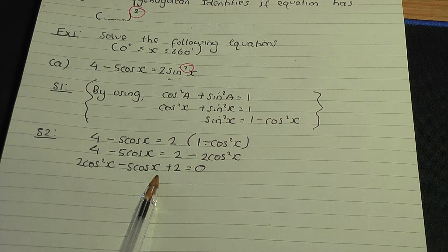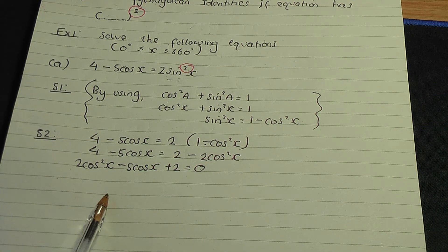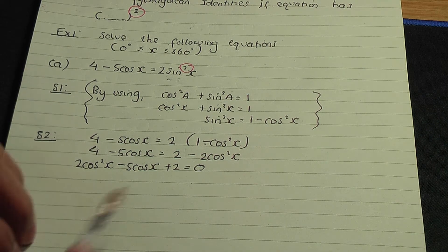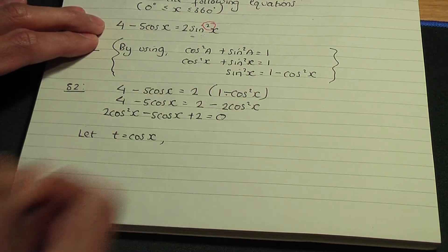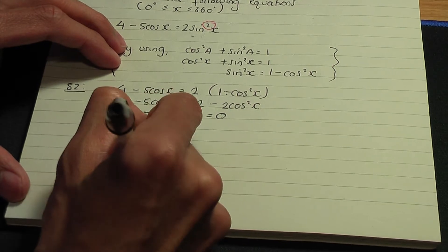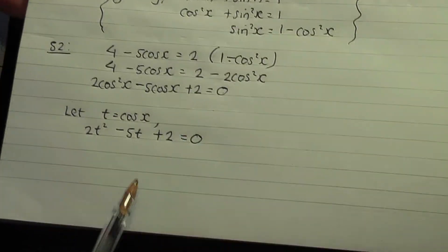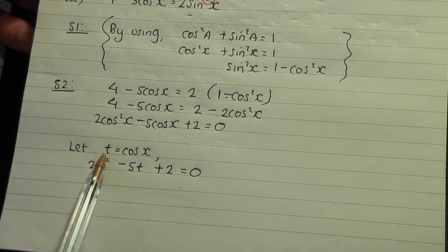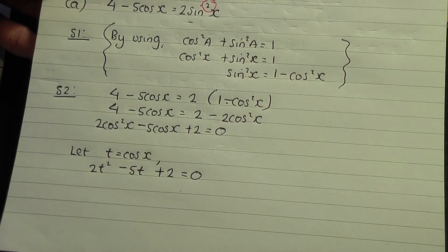In order to solve this quadratic, I want to make it look like a general quadratic. I let cos x equal t. By doing that, I get 2t squared minus 5t plus 2 equals zero. The idea is we work out the t values for this quadratic first, and then go back to the substitution to solve for the x angles.